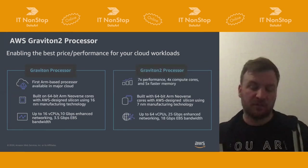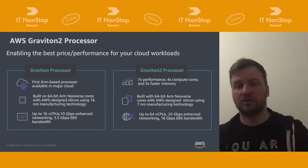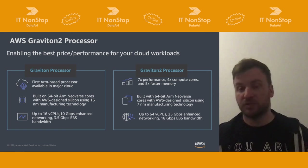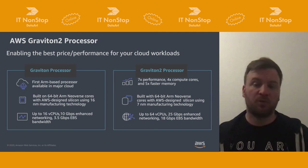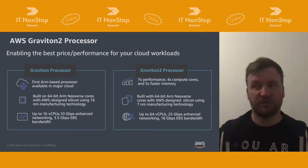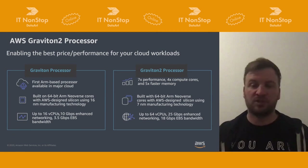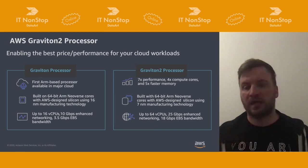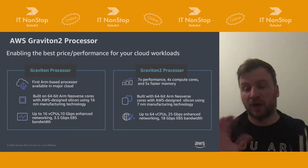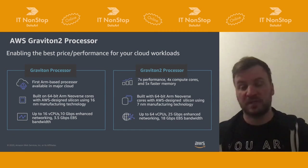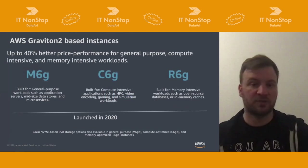Graviton2 is our latest generation ARM-based processor — available in M6g, C6g, and R6g instance families. It provides more performance at a lower price. In some performance testing, it can give up to 40% performance improvement with up to 30% savings. It's available for EC2 instances and for RDS — you can switch instance types with a button click. If you can recompile for ARM architecture, you'll get more performance at a lower price.